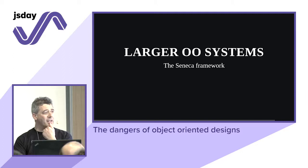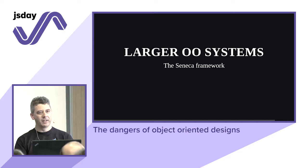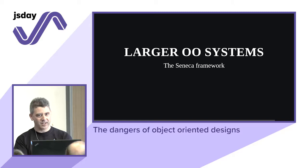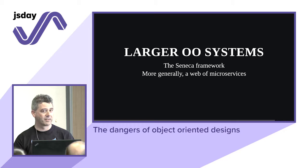Even larger: have you seen the Seneca framework? It's a Node.js framework. They say they're functional, not object-oriented — and they're sort of right. But if you think about it, it's a system where you define microservices and pass messages with pattern matching. Each Seneca process is an object in the proper sense. More generally, a web of microservices is like a web of objects with message passing. The principles work — you just need to apply them in the proper place.